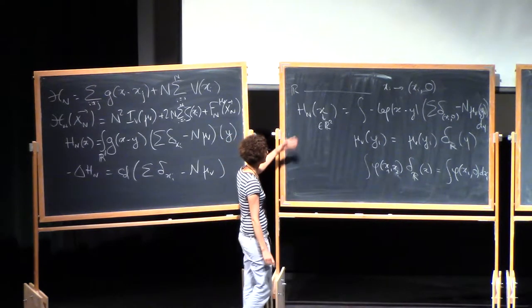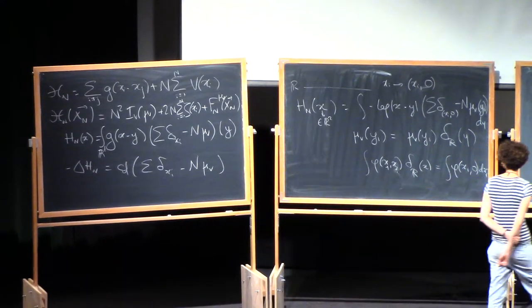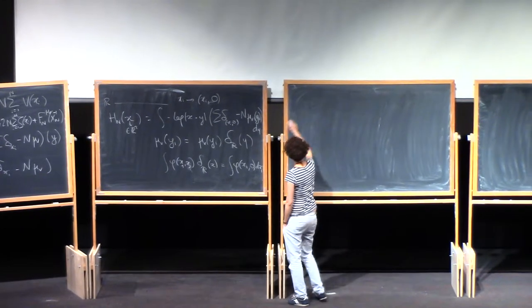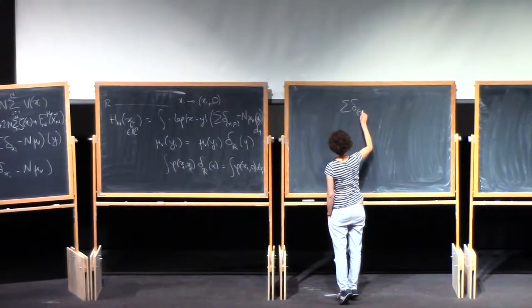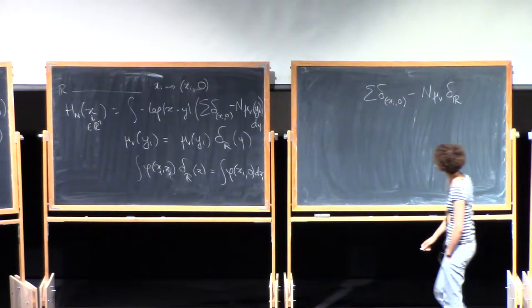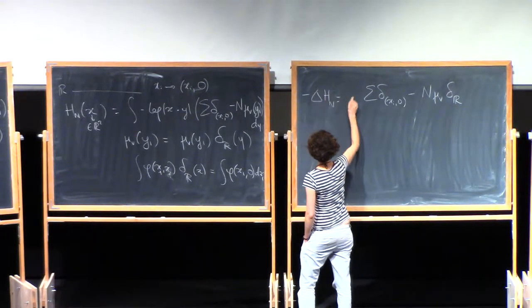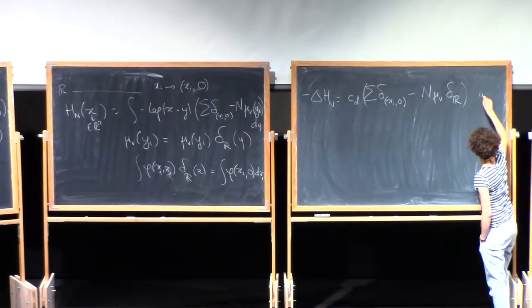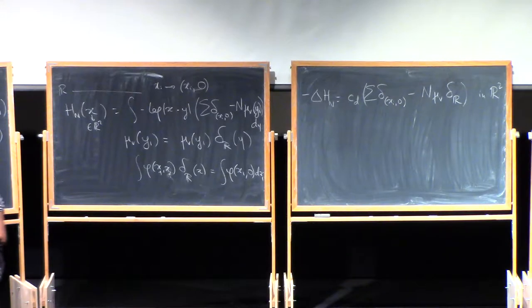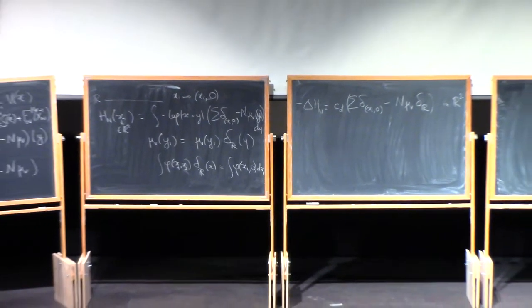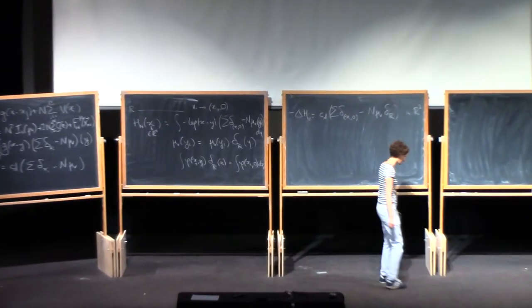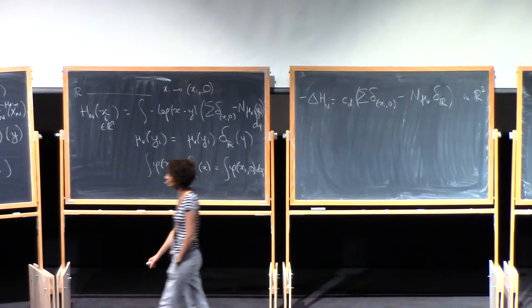So I write here delta R to denote the Dirac on the real line. It's the uniform measure on the real line. When you integrate a function against delta R, it just integrates with zero for the second coordinate. So once you view Hn as a function on R2 this way, it's simply the potential generated by the configuration, the distribution of charges at Xi, 0, minus n mu v times the Dirac mass on the real line.